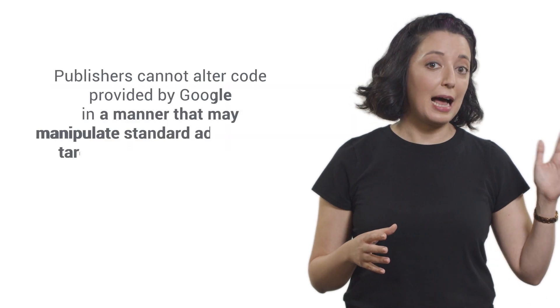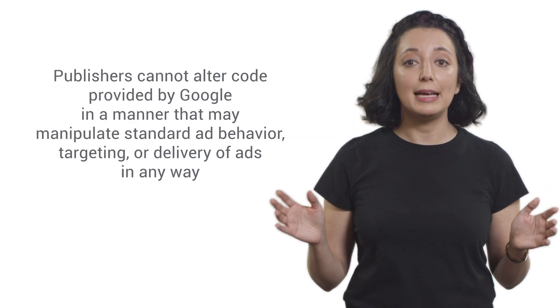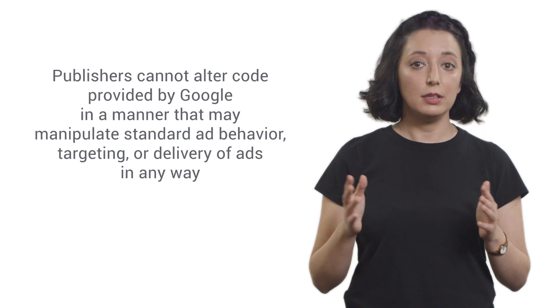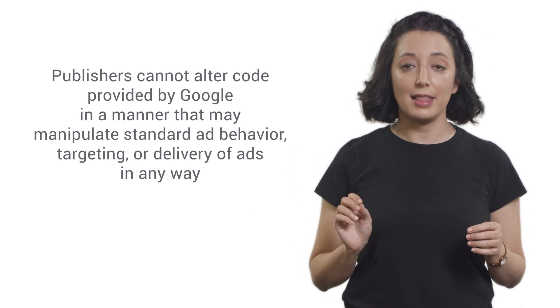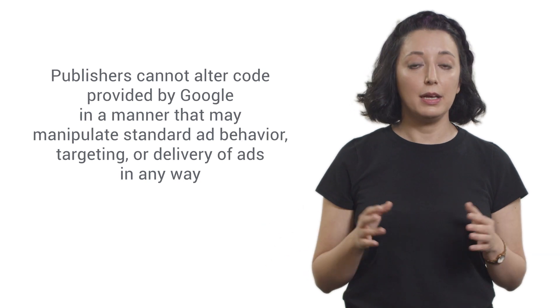Publishers cannot alter ad code provided by Google in a manner that may manipulate standard ad behavior, targeting, or delivery of ads in any way, unless specifically permitted by Google. As an example, for video ads, this means you cannot remove the mute or pause options for the video.